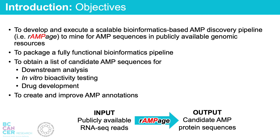The objective is to develop and execute a scalable bioinformatics-based AMP discovery pipeline to mine for AMP sequences in publicly available genomic resources. This pipeline is Rampage: Rapid AMP Annotation and Gene Estimation. The input to this pipeline would be RNA-seq reads, in this case amphibian and insect datasets, and the output would be candidate AMP protein sequences. The candidate AMPs will be tested downstream for bioactivity, toxicity, and efficacy.